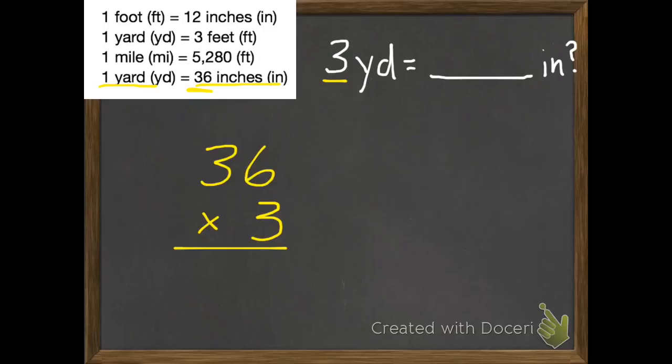We have three yards, and there are 36 inches in each yard. So 36 times 3. 6 times 3 is 18. 3 times 3 is 9, plus 1 is 10. So we get 108 inches. 3 yards equals 108 inches.